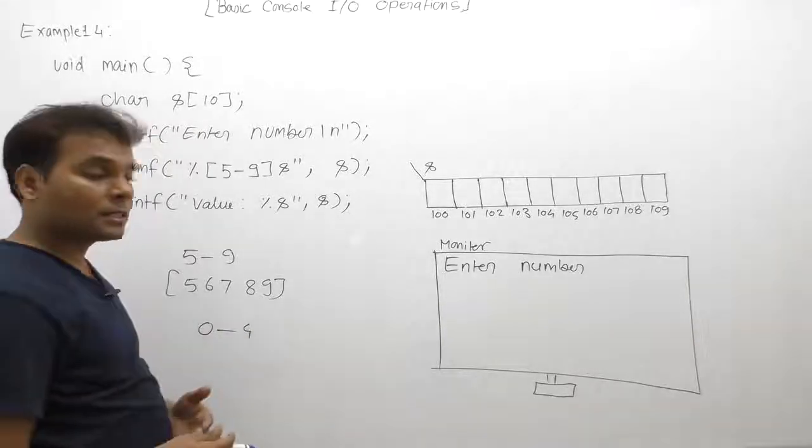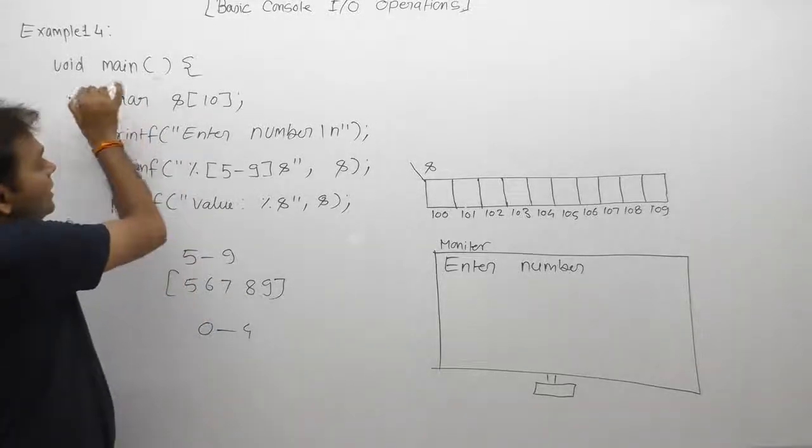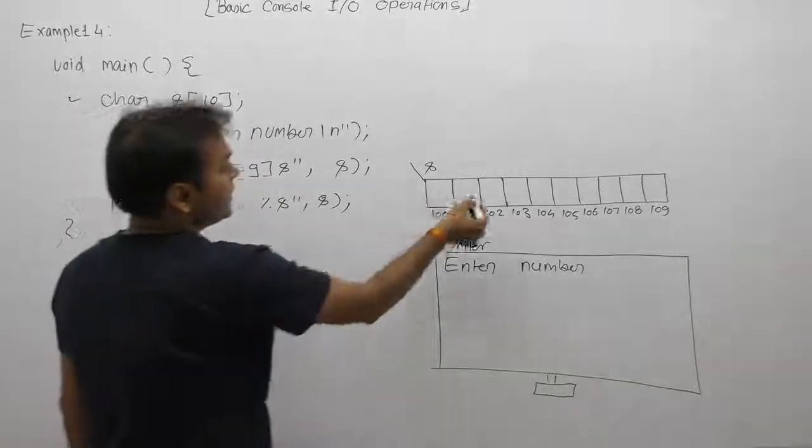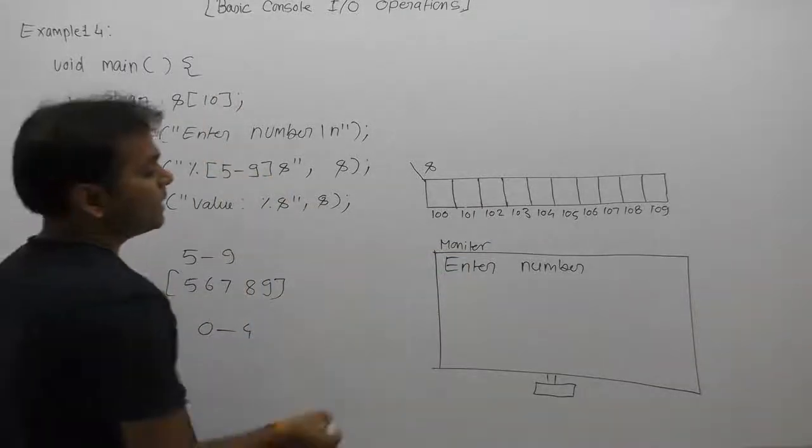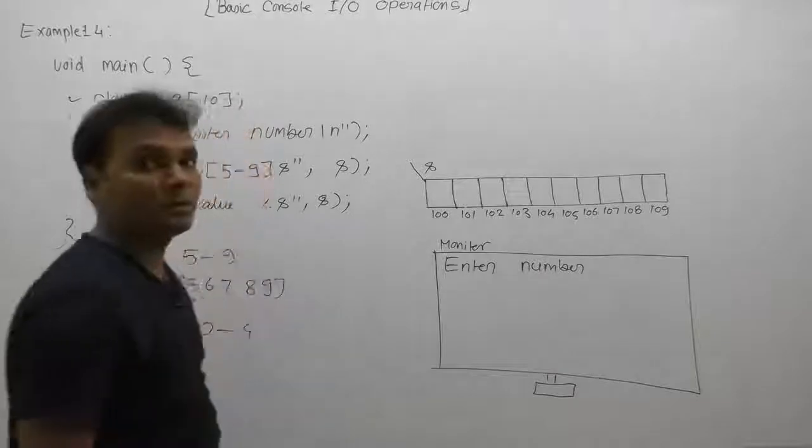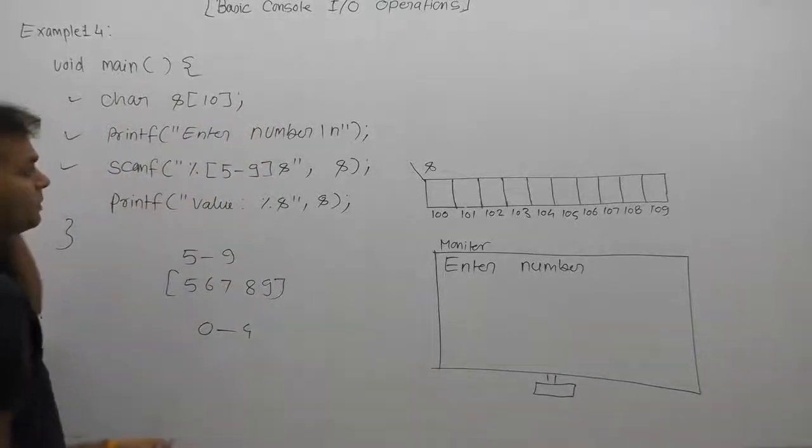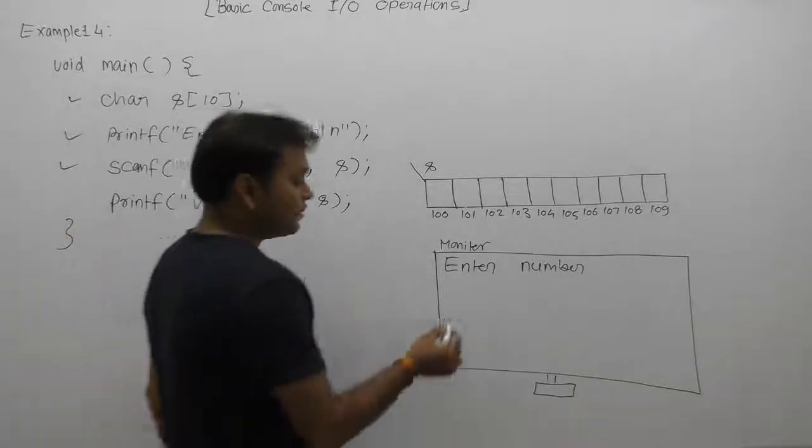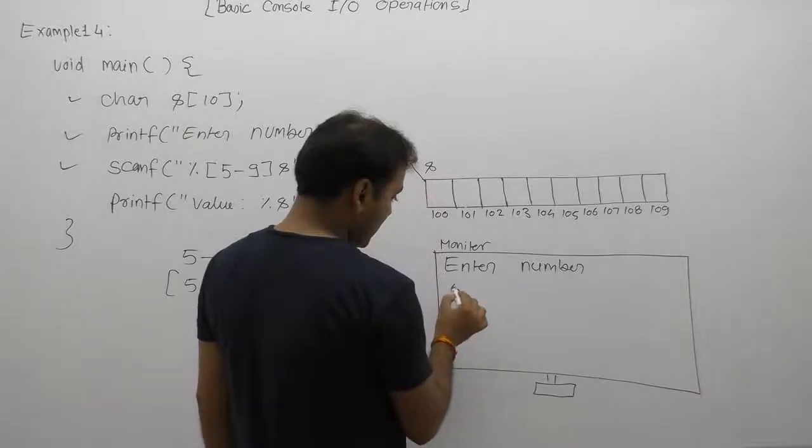Again we are declaring an array 's' with given size 10. Next we are displaying a message on the monitor as 'enter number', same as previous videos. Again we are using the scanner function. Here we are reading into the array, suppose that we are entering 5, 9, 2.